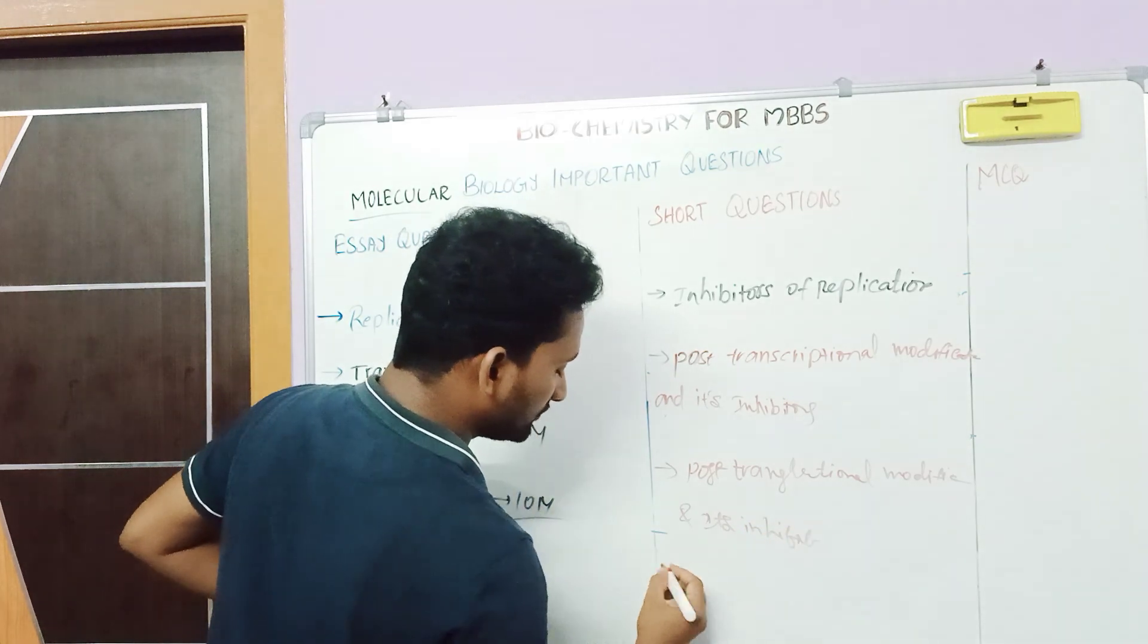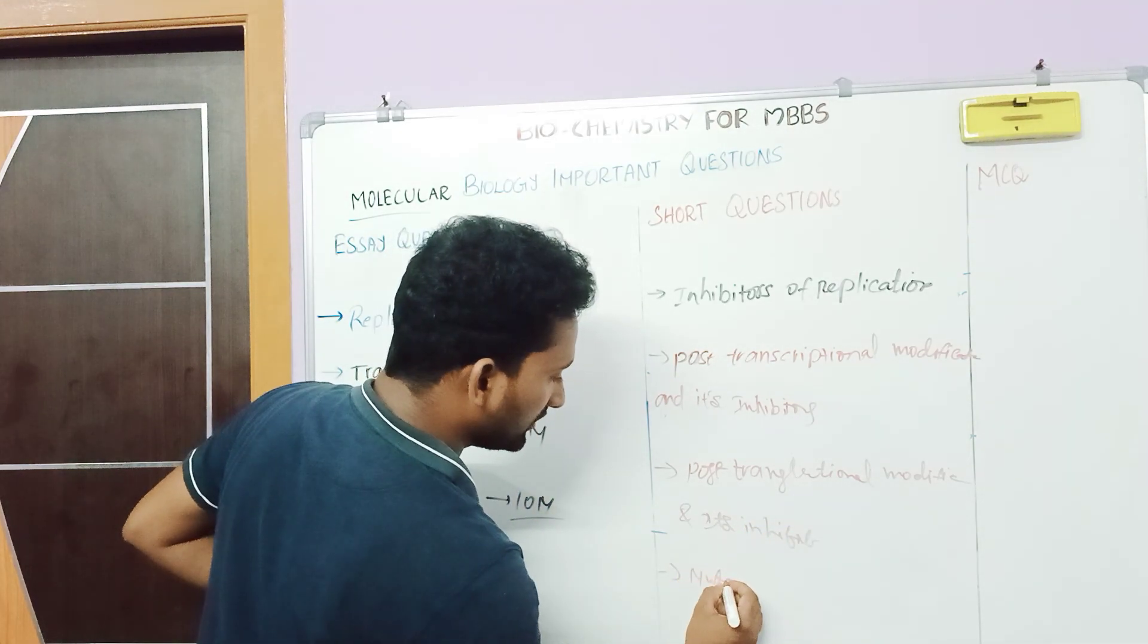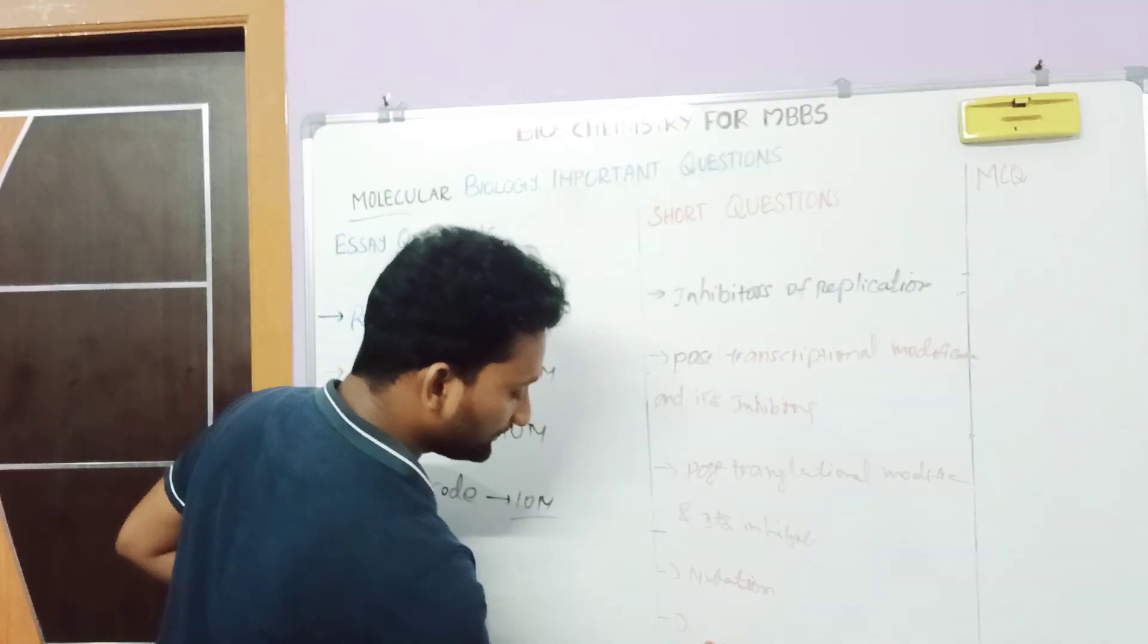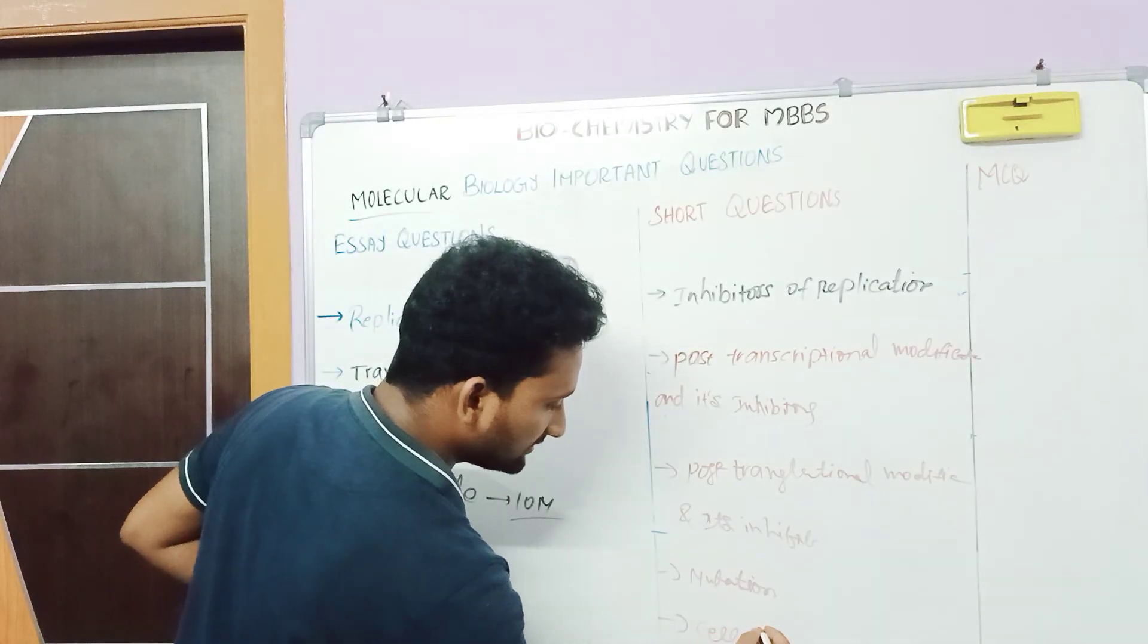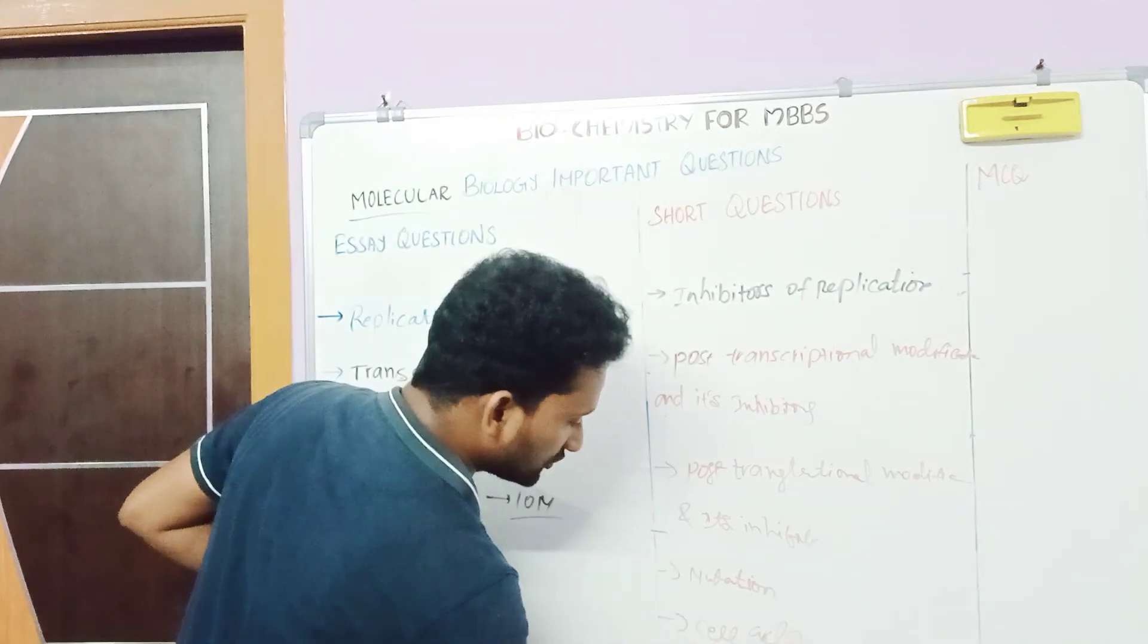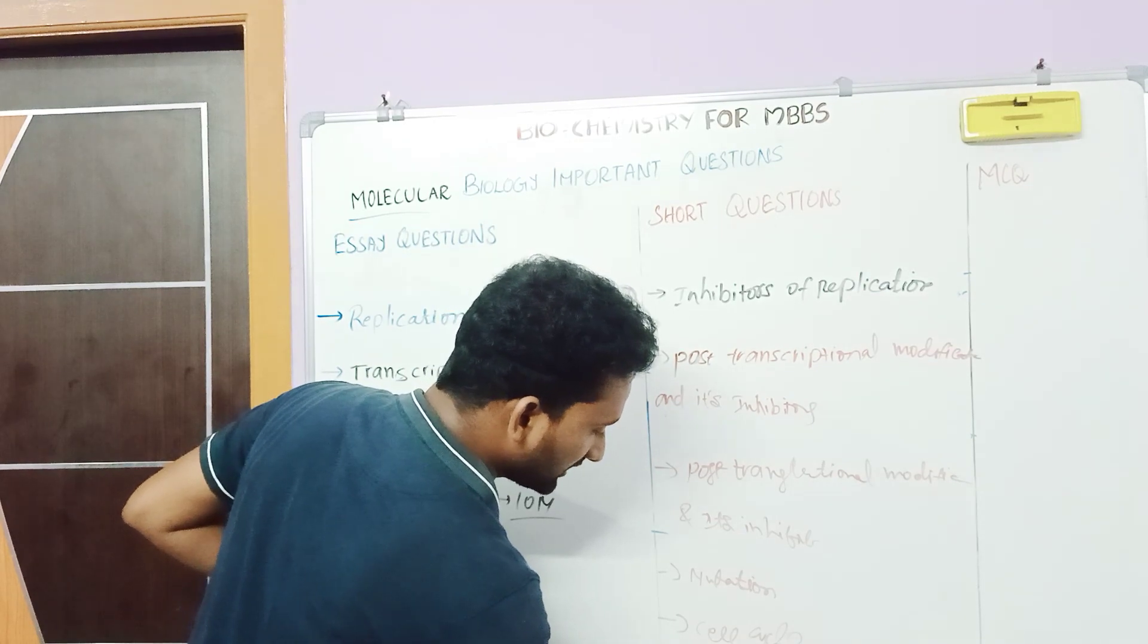The next short answer would be post-translational modification and its inhibitors. The fourth one would be mutations, and the next one would be cell cycle.